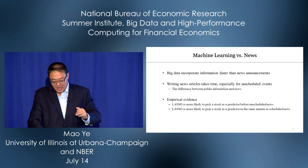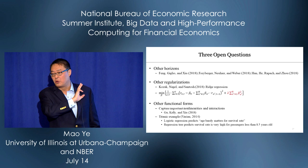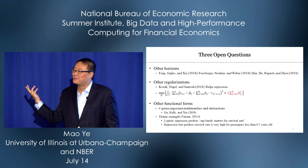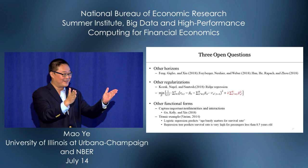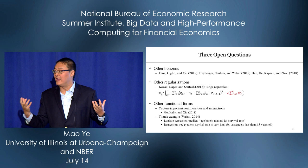Moving broader — even in trading, there are at least three open questions. First: Alex, Anna, and I started at the minute-by-minute horizon, but you can apply LASSO to other horizons. There are already three nice papers on monthly horizons, but there's a huge spectrum between one minute and one month. What kind of economic signal does LASSO capture at other horizons?